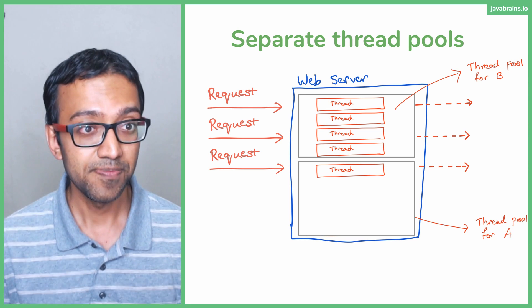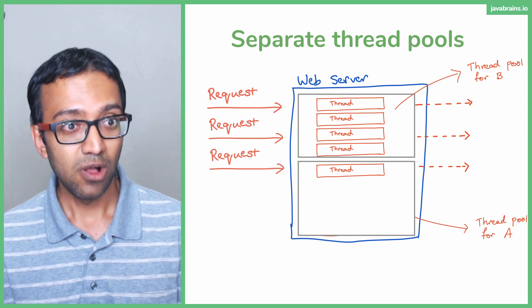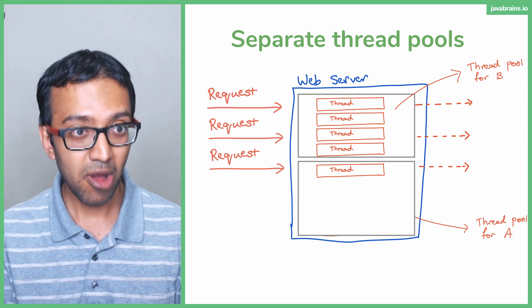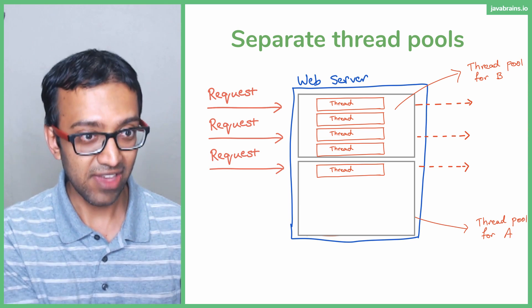B is slowing down, A is going fast. B has all these requests lined up. It's consumed all the threads, but still the amount of threads allocated for A is not affected by what B is having.